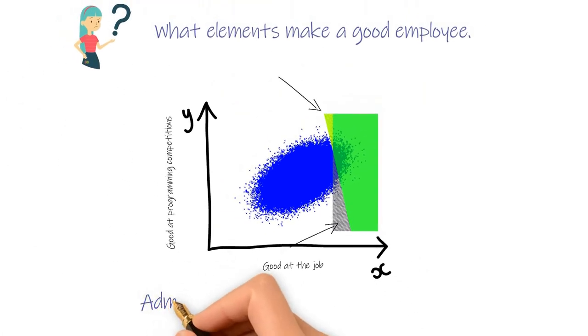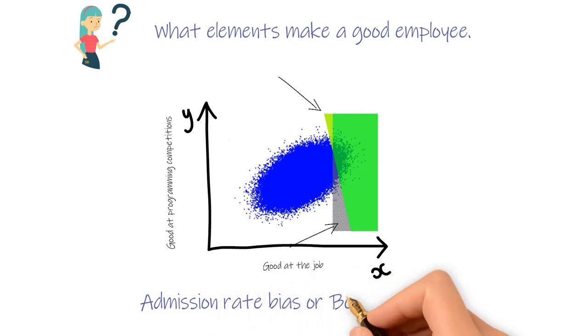These two triangular areas explain why Google's director of research has that impression we mentioned at the beginning. If you can think of a way to fix it, please leave a comment below. This phenomenon is known as admission rate bias or Berkson's bias.